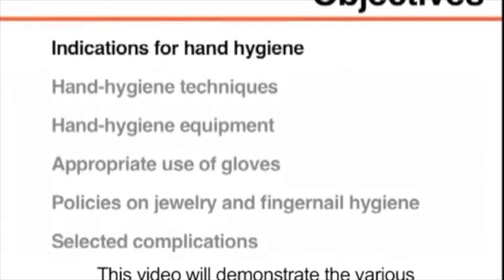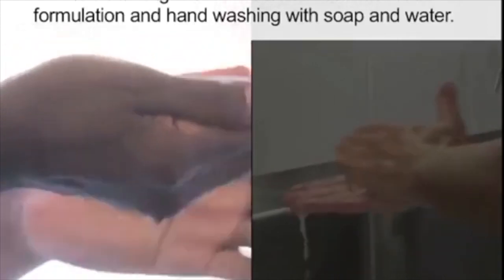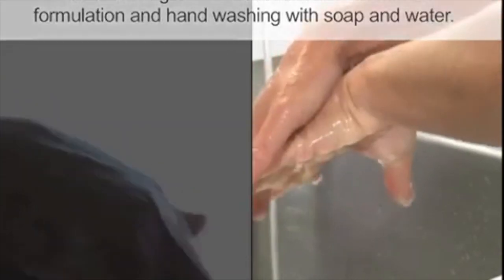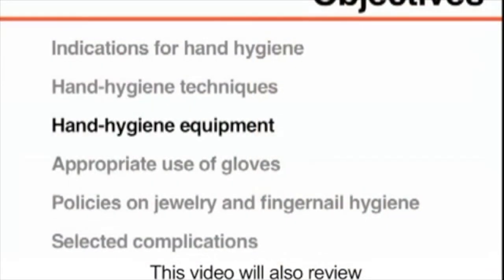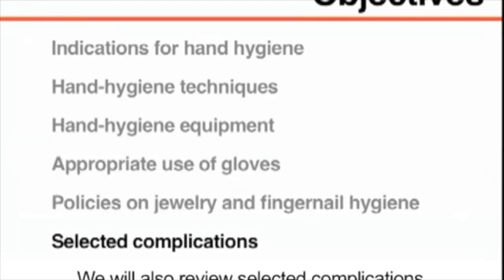This video will demonstrate the various indications to perform hand hygiene as well as two different hand hygiene techniques: hand rubbing with an alcohol-based hand rub formulation, and hand washing with soap and water. This video will also review hand hygiene equipment, the appropriate use of gloves, policies on jewelry and fingernail hygiene, and selected complications associated with hand hygiene with suggestions about how to avoid them.